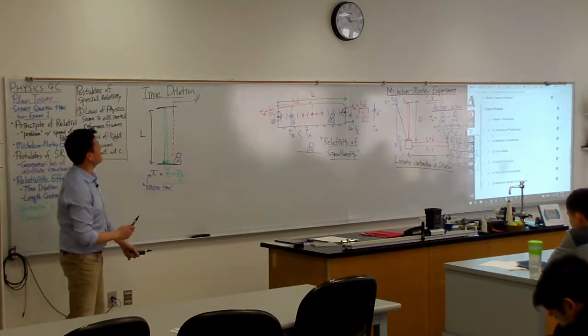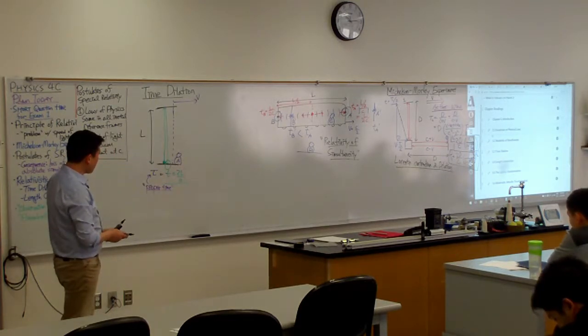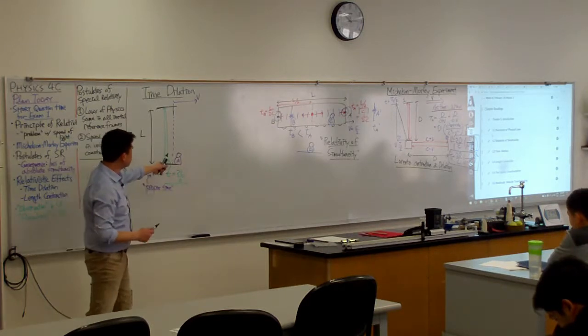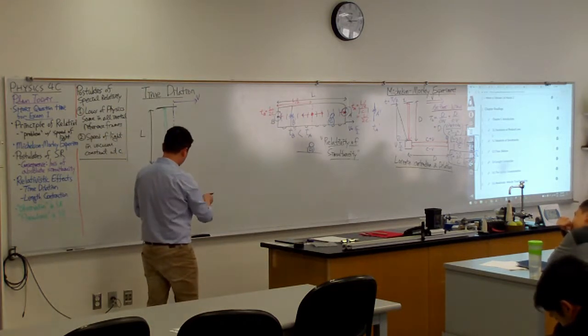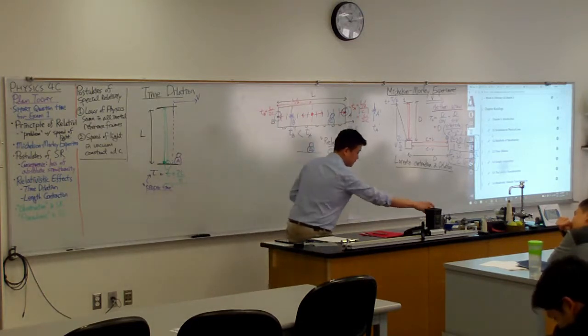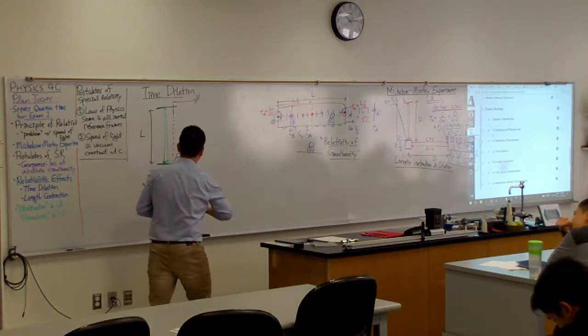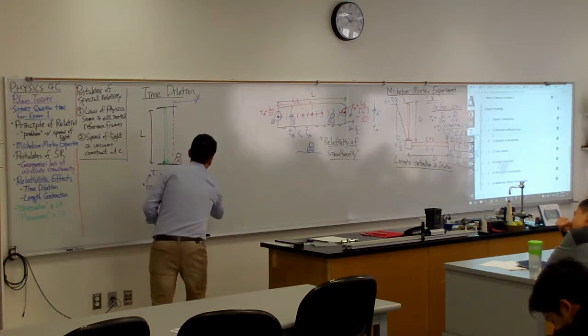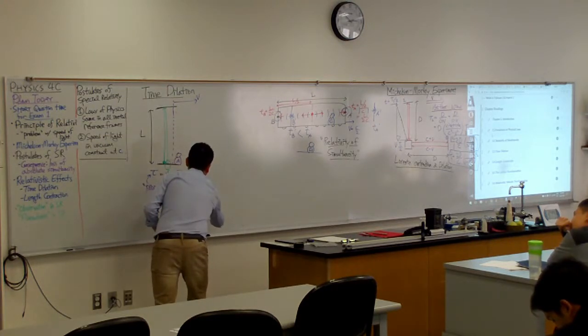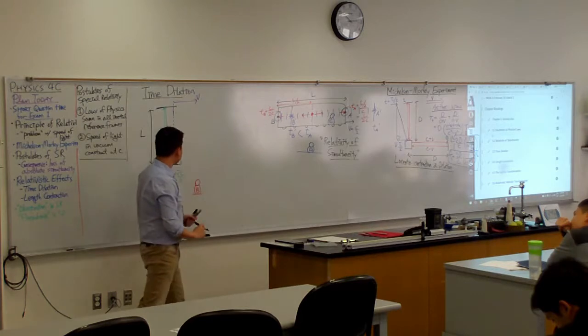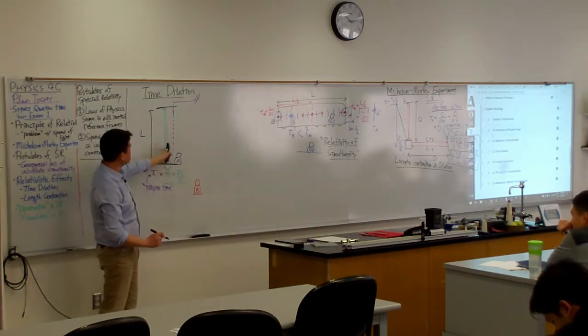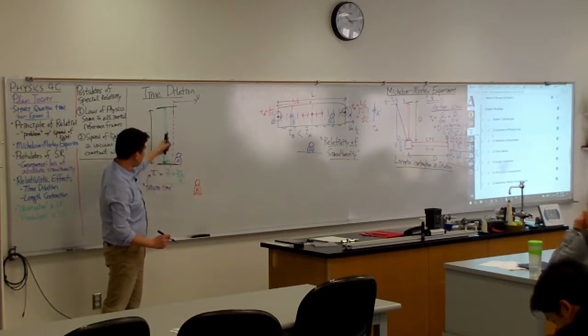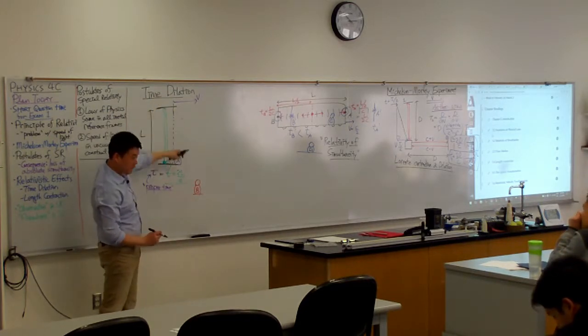Let me call this proper time. Then, what we want to look at is, how does this clock look from the perspective of Observer B? From the perspective of Observer B, who's sitting out here, watching the clock move, does it still take the same amount of time for this light to bounce from one mirror to the other mirror and then come back?